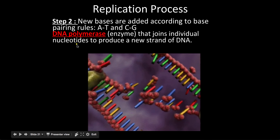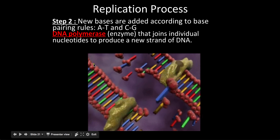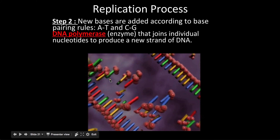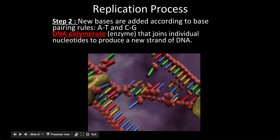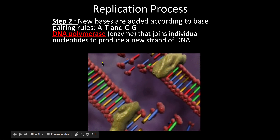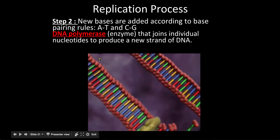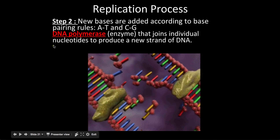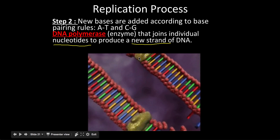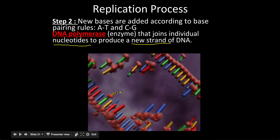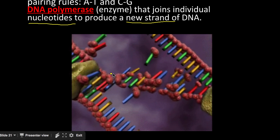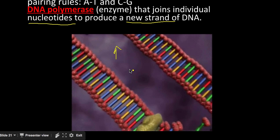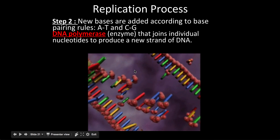Step two: new bases are added according to those same base pairing rules — A's with T's and C's with G's. The molecule that jumps on here is another enzyme called DNA polymerase. DNA polymerase enzymes are going to stick nucleotides together to produce a new strand of DNA, pairing all these free nucleotides onto the molecule and creating another strand of DNA.